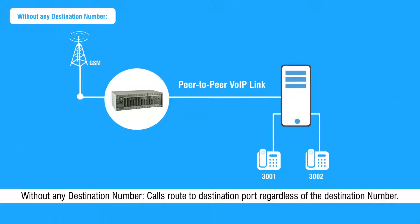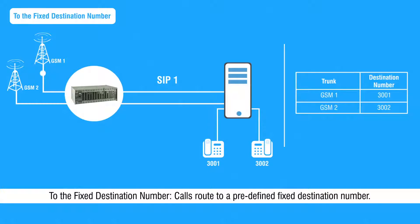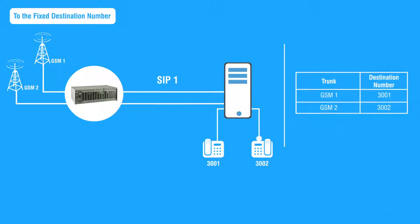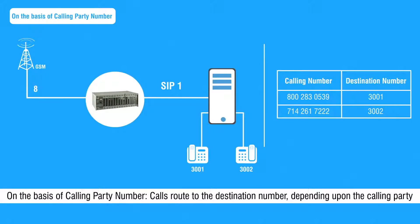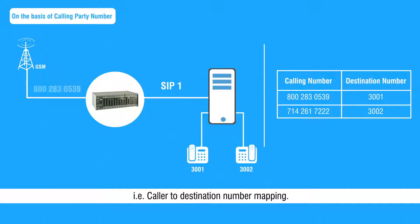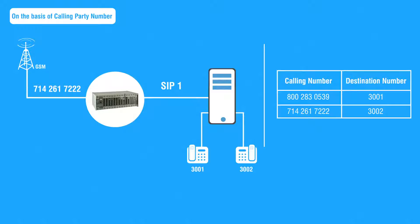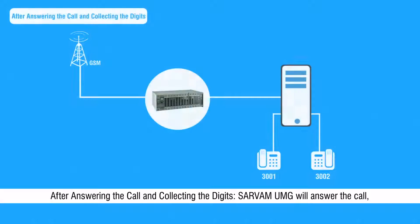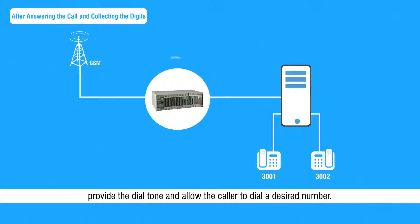Without any destination number: calls route to destination port regardless of the destination number. To the fixed destination number: calls route to a predefined fixed destination number. On the basis of calling party number: calls route to the destination number depending upon the calling party, that is caller-to-destination number mapping. After answering the call and collecting the digits: Servum UMG will answer the call, provide the dial tone, and allow the caller to dial a desired number.